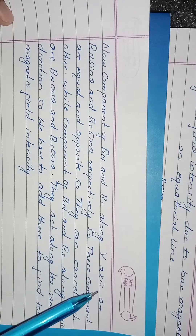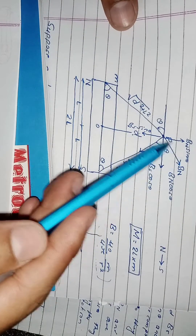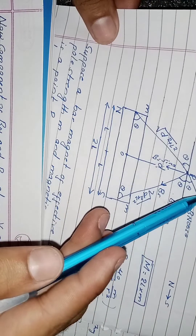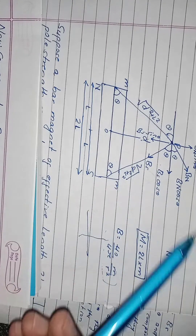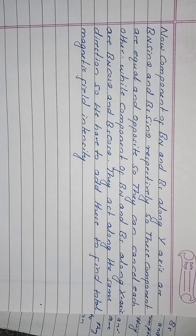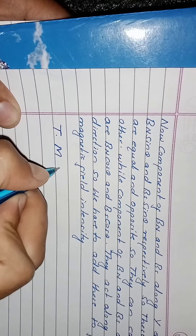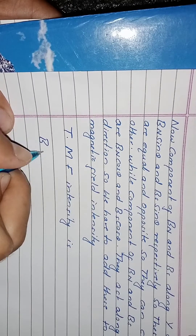There is no hard and fast rule. The components of BN and BS along the y-axis are BN sinθ and BS sinθ. These components are equal and opposite, so they cancel out. The total magnetic field intensity is the sum of the x-components.